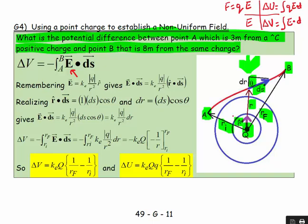r̂ dotted with ds is the magnitude of r̂ — it's a unit vector, so it's 1 — times the magnitude of ds, times the cosine of the angle θ between them. Using trig, the radial component is ds·cosθ, where ds is the hypotenuse. So E dotted with ds equals keQ over r² times ds·cosθ, and ds·cosθ equals dr.